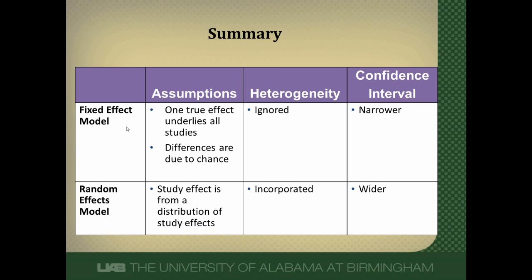In summary, a fixed effects model assumes there's one true effect underlying all studies, and any differences among studies are purely due to chance. Heterogeneity is ignored — it doesn't exist. What you get from a fixed effects model is a somewhat narrower confidence interval compared to a random effects model. On the other hand, a random effects model says studies are different, there's a distribution of study effects, and heterogeneity is important and gets incorporated into the model. Because it accounts for more variance, this results in a wider confidence interval.